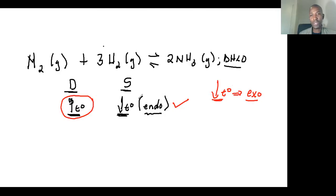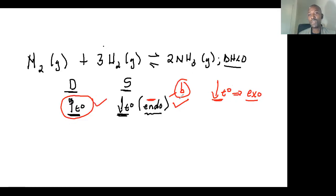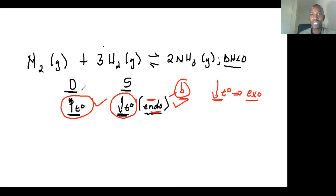Going back to our example: because I've increased temperature, I must find the reaction which decreases temperature, which is endothermic. The endothermic reaction here is the backward reaction. So when you increase temperature, you favor the backward reaction — because it's endothermic, because it decreases temperature, because the system is trying to oppose the disturbance and reinstate its equilibrium.